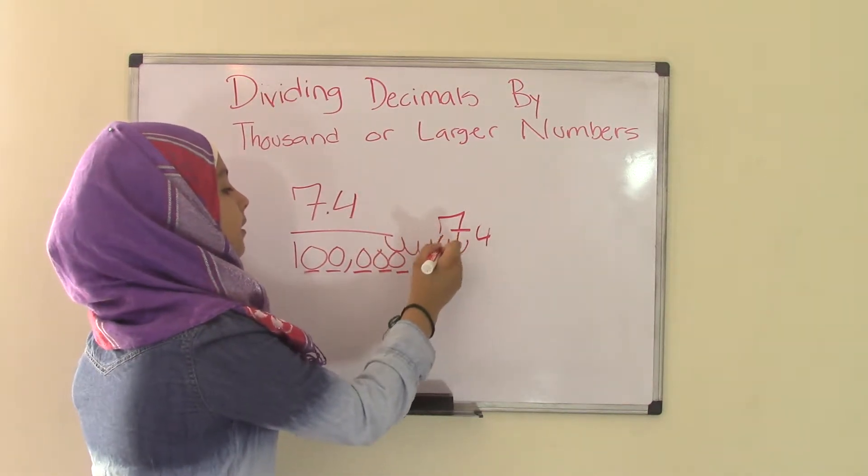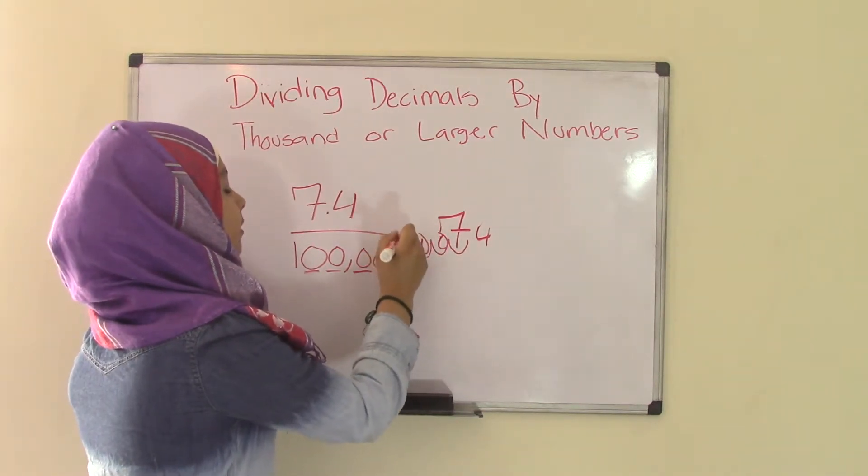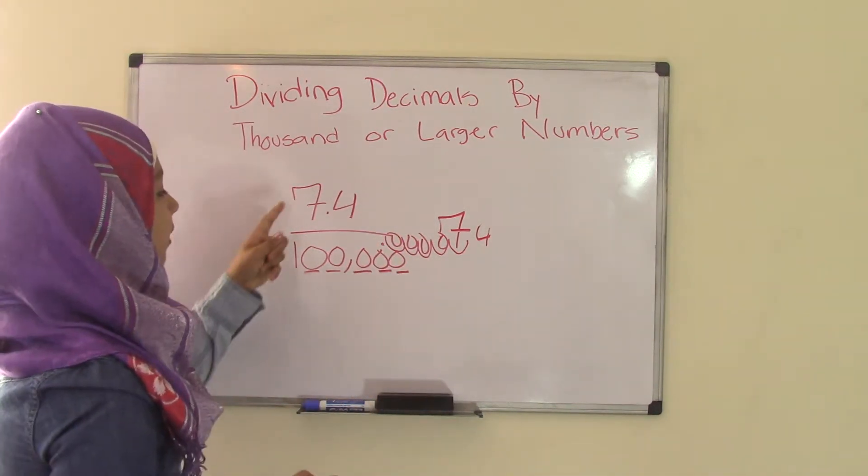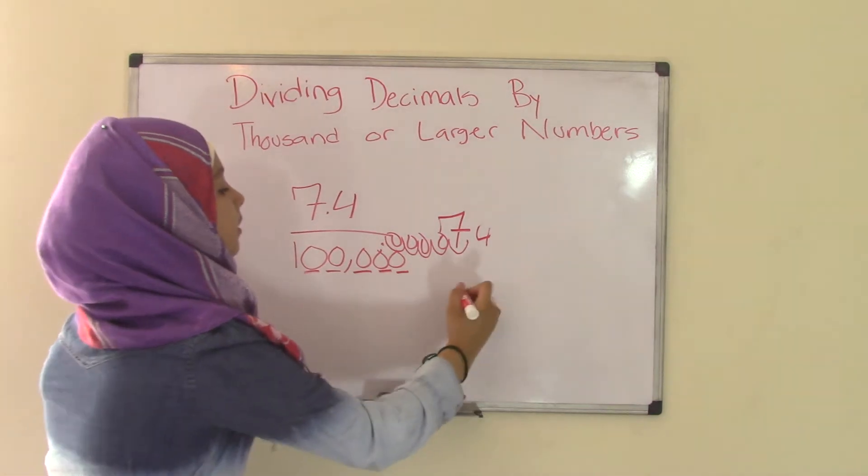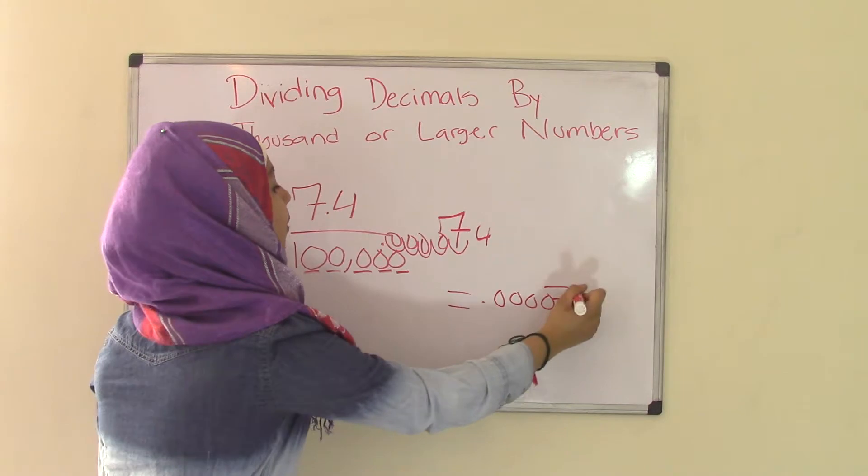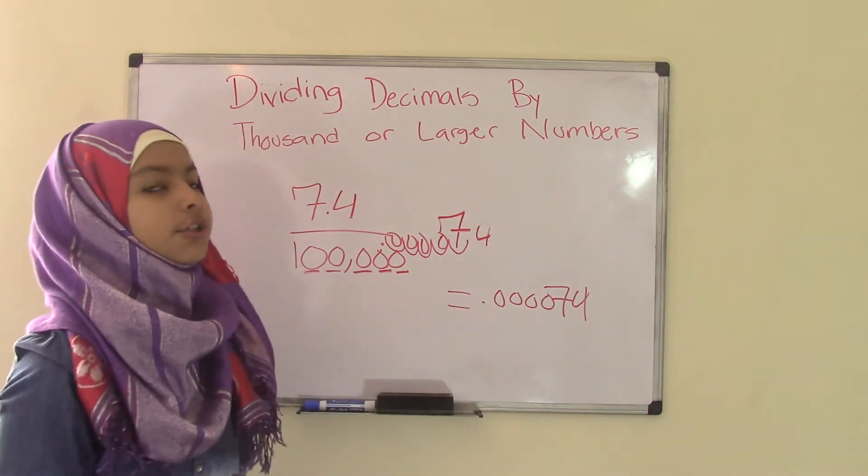So in the gaps, we're going to fill in zeros. And the decimal point is going to be over here. So that means the quotient of 7.4 divided by 100,000 equals .000074. Now that is one big quotient, right?